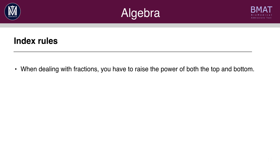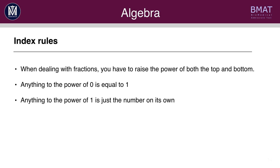Here are a few more tips. Firstly, when you deal with fractions you have to raise the power of both the top and the bottom. So a half to the power of 3 is equal to 1 cubed over 2 cubed. Anything to the power of 0 is equal to 1 — for example 5 to the power of 0 is 1, and 50 to the power of 0 is 1. Anything to the power of 1 is just the number itself, so 5 to the power of 1 is 5, and 15 to the power of 1 is 15.